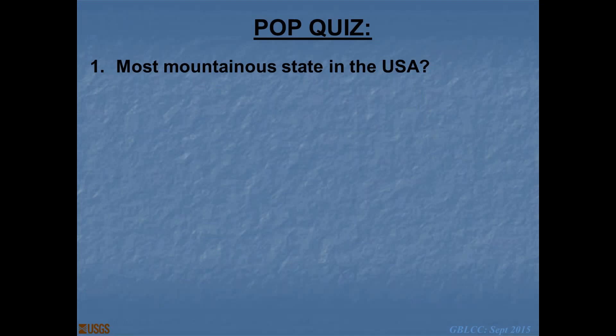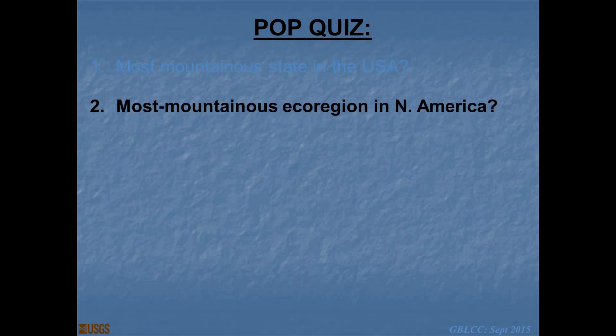Thanks, Todd. To really illustrate some of the challenges and implications for some of the work that we've been doing over the last two decades, I'm going to give you all a pop quiz. First, which is the most mountainous state in the USA? Nevada, which comprises the majority of most definitions of the Great Basin. As defined by which has the largest number of mountain ranges within an ecoregion, that would be the Great Basin.